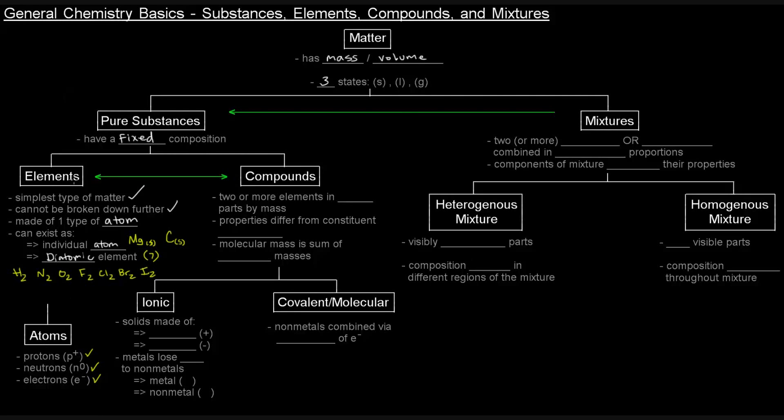The other type of pure substance is compounds. Compounds, basically, when we have two or more elements in fixed parts by mass, combined in fixed parts by mass, which basically means we're going to have to have whole number ratios of atoms to make up a compound.